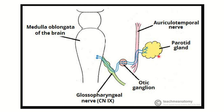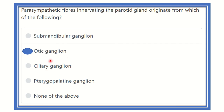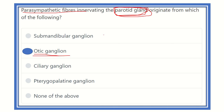The parotid gland receives its parasympathetic supply from the glossopharyngeal nerve via the otic ganglion. So our answer is the otic ganglion, which provides the parasympathetic innervation for the parotid gland — one of the major salivary glands located at the mouth. Thank you.